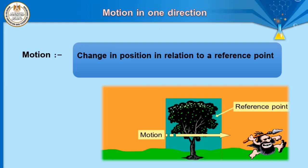For example, when I travel from Fayoum to Cairo, from Cairo to Alexandria, or from Aswan to Cairo, there are many starting points and ending points. Each of these is called motion because the position of the object changes from starting point to ending point.